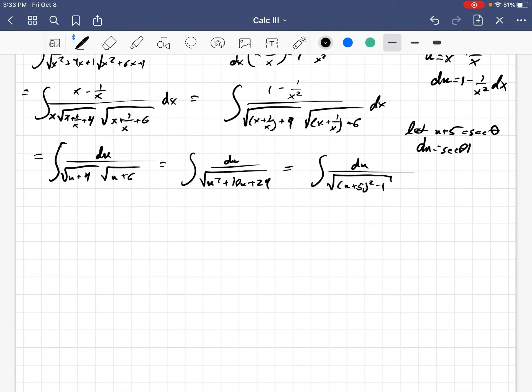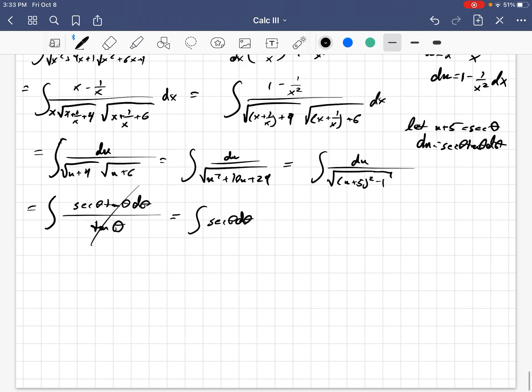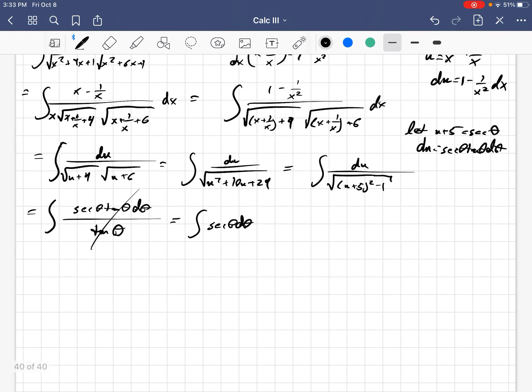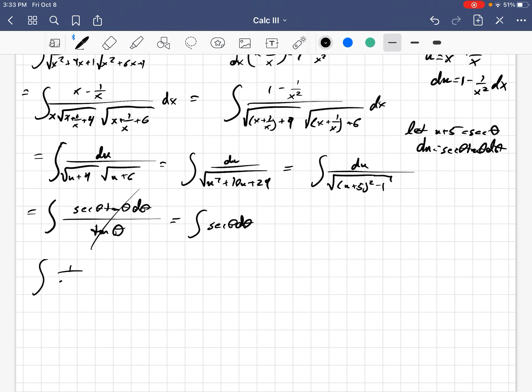So, then du is secant theta tan theta d theta. And we get the integral of secant theta tan theta d theta on the top. And on the bottom, we just get tan theta. The tan thetas cancel out very nicely. And we get the integral of just secant theta d theta, which is a pretty standard integral. It's something that I can't remember, so I'm going to have to derive it real quick. 1 over cosine of theta. Oh, I remember. Which is natural log absolute value of secant theta plus tan theta, plus, of course, the ubiquitous constant.